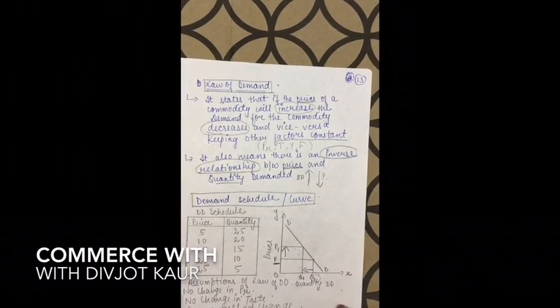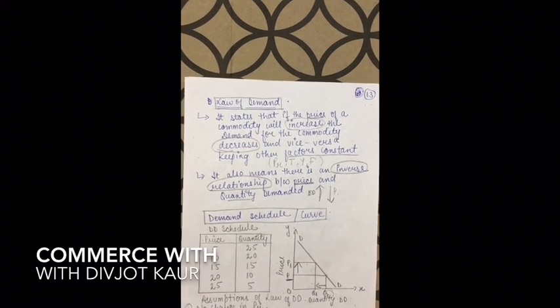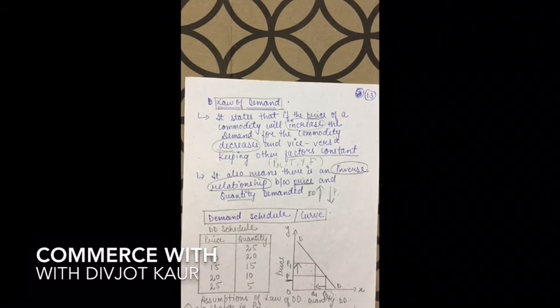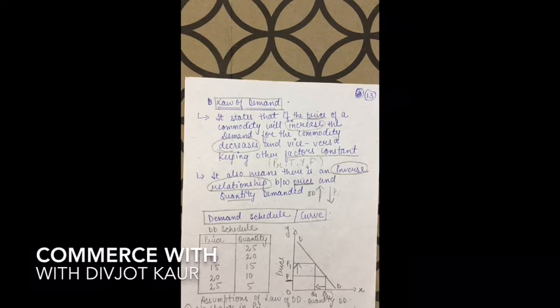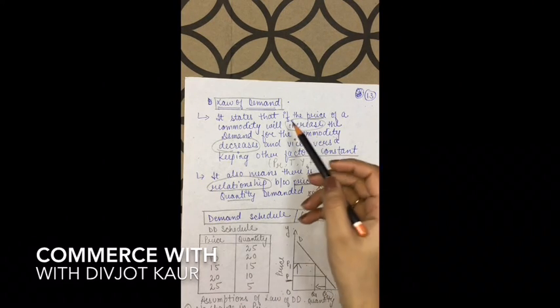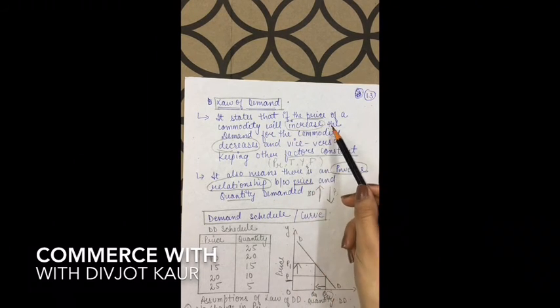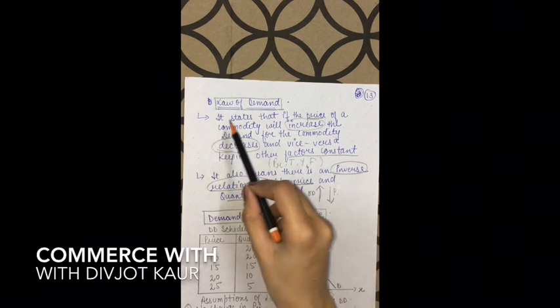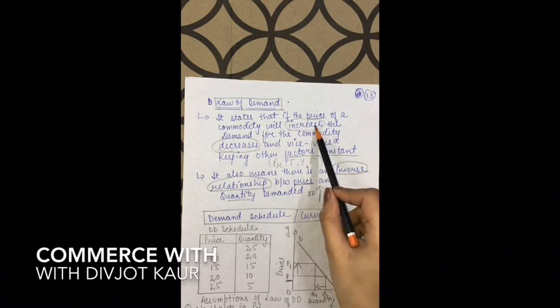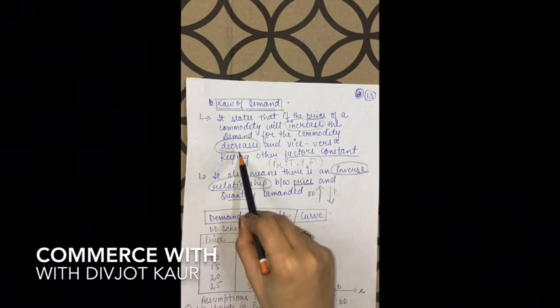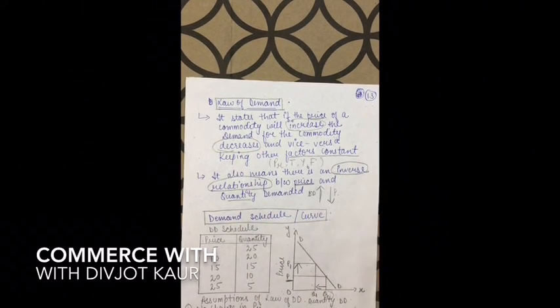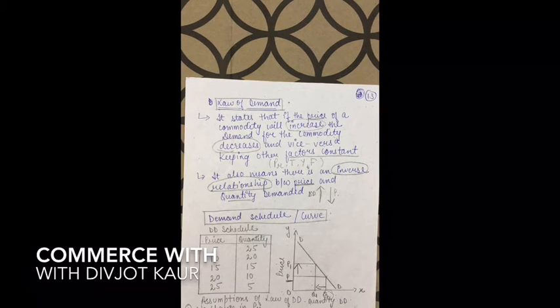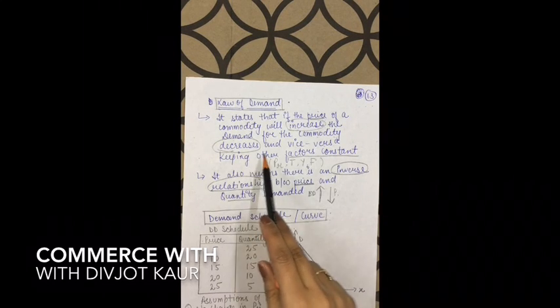Next topic: Law of Demand. What does the law of demand state? It is a very simple definition that often comes as a one-mark question. It states that if the price of the commodity increases, the demand for the commodity decreases, and vice versa — if price decreases, demand increases. This holds keeping other factors constant. There is an inverse relationship between price and quantity demanded.